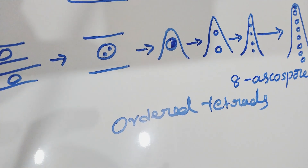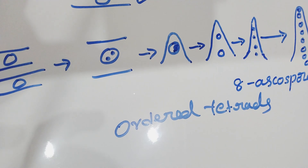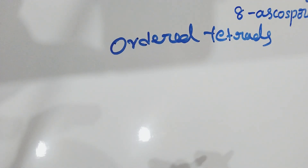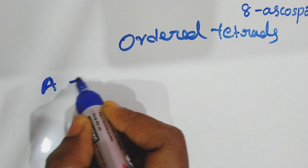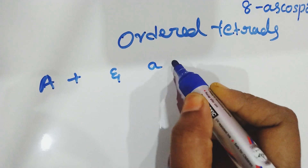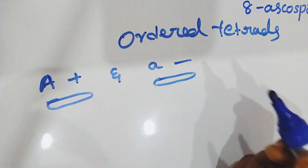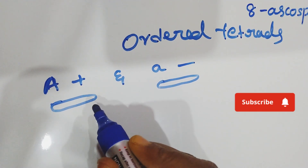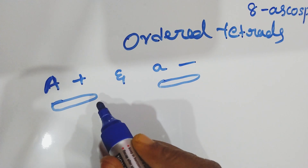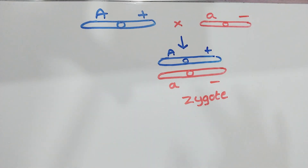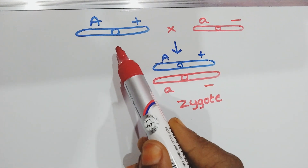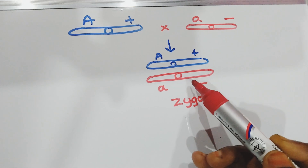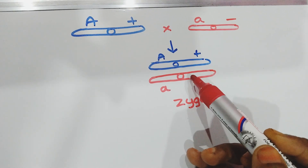Let's see an example for the formation of ascospores in Neurospora. A cross is made between two varieties: one is the wild variety (A+) and the other is the mutant variety (A−). These are haploid mycelia, each having a haploid genome — that means only one set of chromosomes is present. When they fuse together, it results in the formation of a zygote consisting of two sets of chromosomes — the diploid condition.